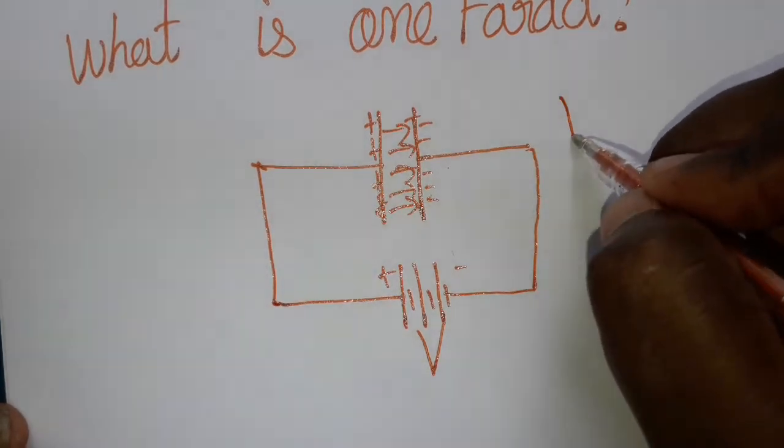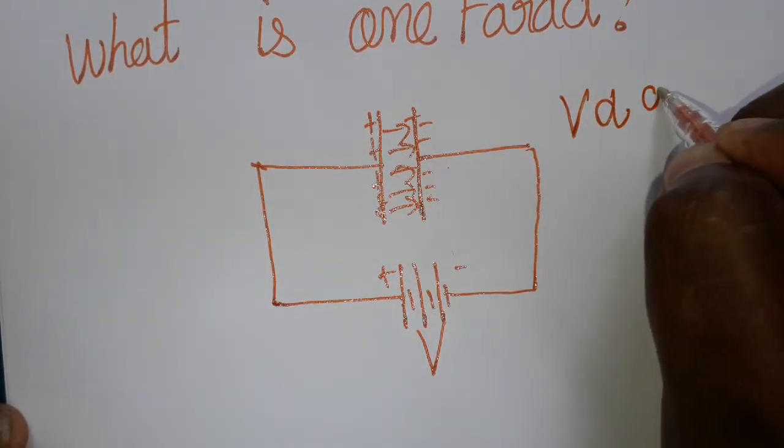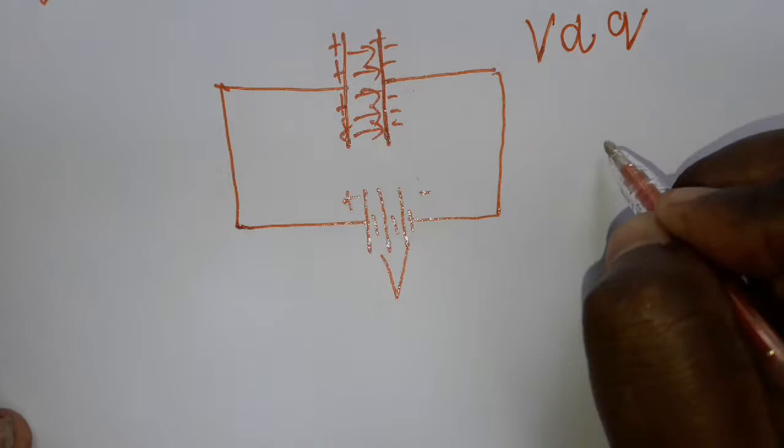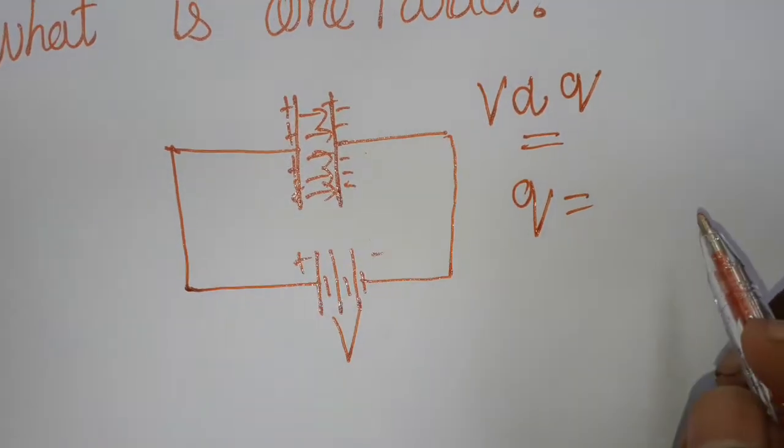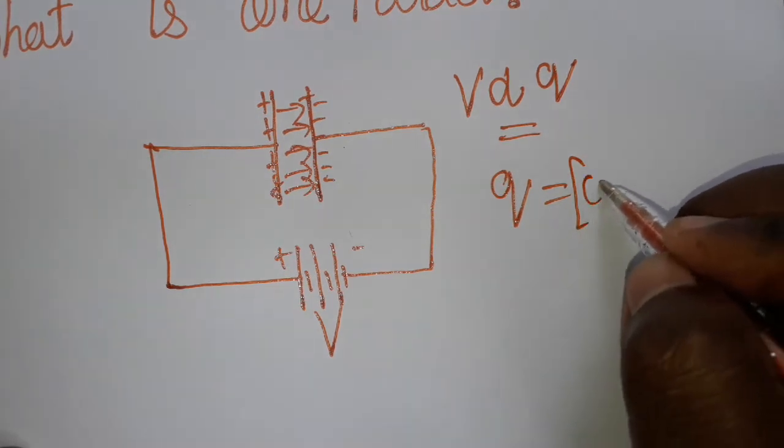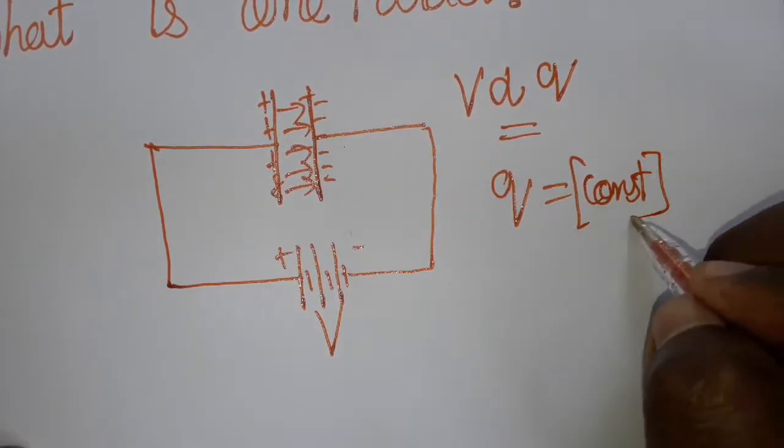That means voltage is directly proportional to the stored charge Q. When we remove the direct proportionality, we should add a constant. So constant times V.